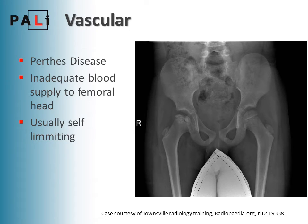For vascular causes, Perthes disease is avascular necrosis of the femoral head. It's usually self-limiting. Young children under six who get it do much better than older children. As you can see on this x-ray, the right hip's femoral head just doesn't look quite right — it's disrupted, looks a little bit woolly — and that's your classic Perthes x-ray.